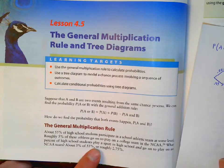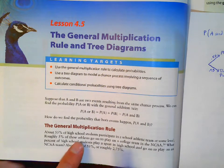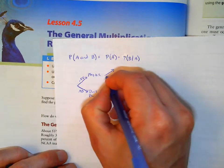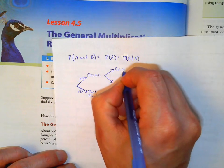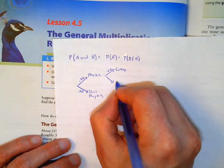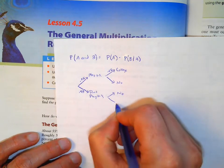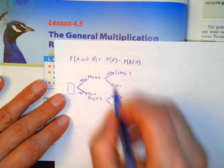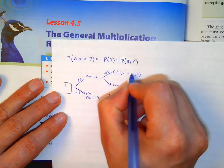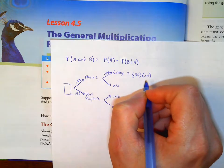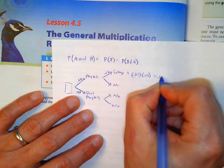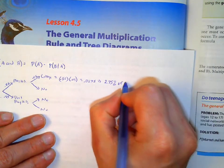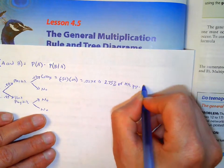Of those that go on to play, roughly 5% of the athletes that play high school sports go on to play at the college level. So what percent of the whole high school population plays in college? We take 0.55 and multiply it by 0.05, and we get 0.0275 — about 2.75% of the high school population plays in college.